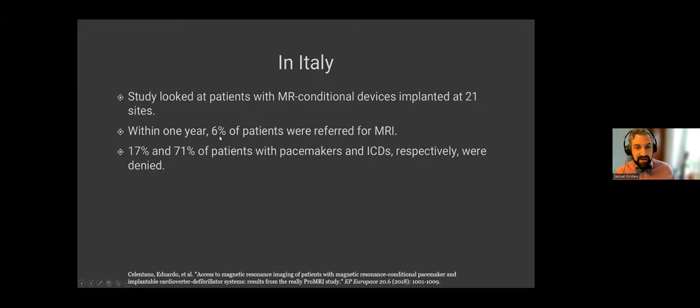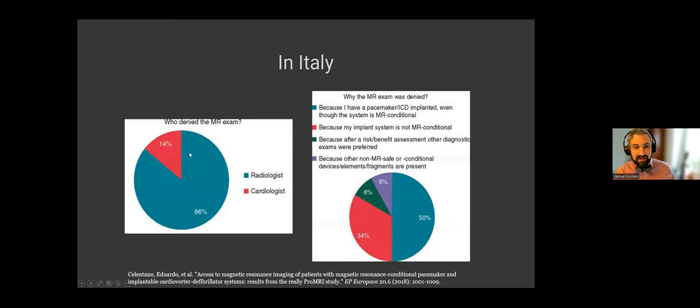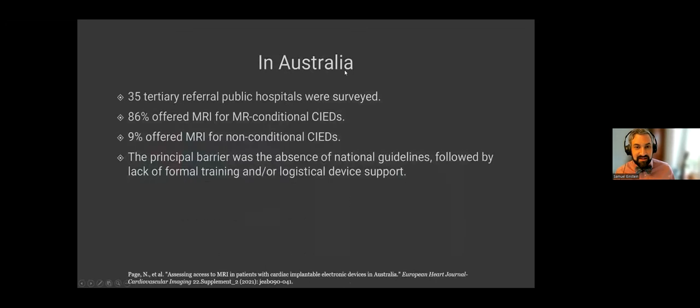In Italy, about 71% of patients with ICDs are still getting denied, and almost 20% of patients with pacemakers. And that's mostly by radiology, mostly because they just don't know any better. It's just a lack of education. And so this is problematic. Australia too, right? 35 tertiary referral public hospitals were surveyed. While 90% offered MRI for MR conditional CIEDs, which is fantastic, only less than 10% offered MRI for non-conditional CIEDs. So that is a problem. And I talked about the principal barriers being absence of guidelines, lack of formal training, and logistical device support.